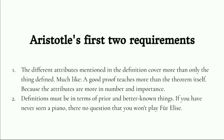Now we move on to Aristotle's three requirements of a definition. First: the different attributes in a definition, when taken separately, cover more than the notion defined, but their combination does not. For example, in the definition of a square, there are several notions: figure, four-sided, equilateral, right angle — each covers a broader class. But when combined, we get precisely a square. A good proof teaches more than the theorem — it's much like that.